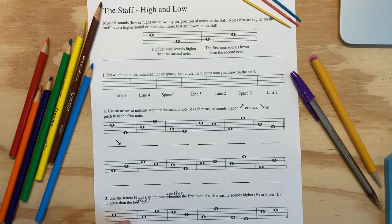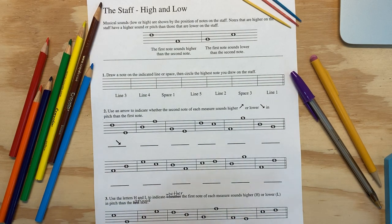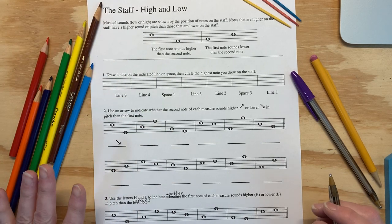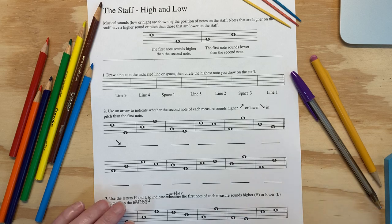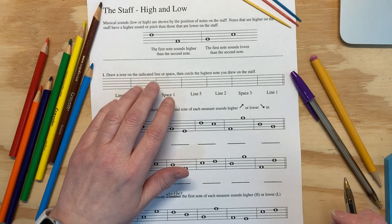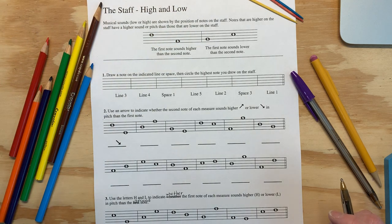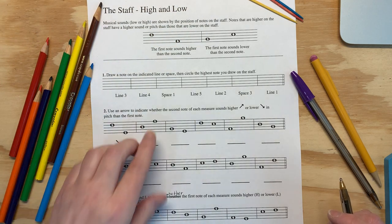Page three in your packet and we're going to talk about the staff high and low. Musical sounds low or high are shown by the position of notes on the staff. Notes that are higher on the staff have a higher sound or pitch than those that are lower on the staff.